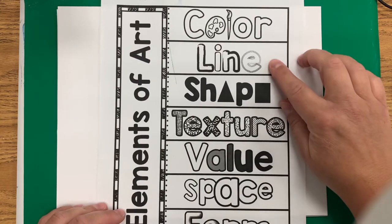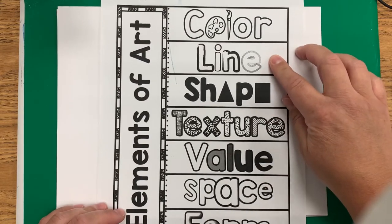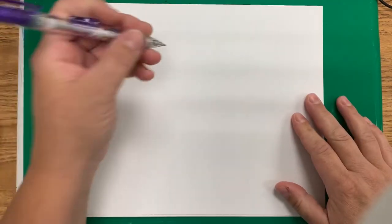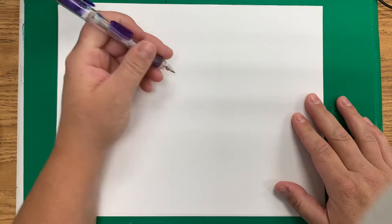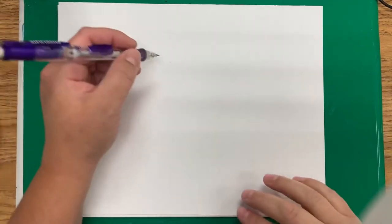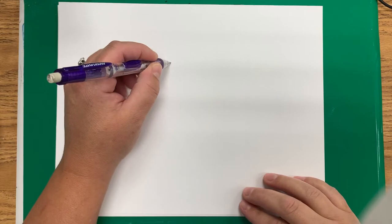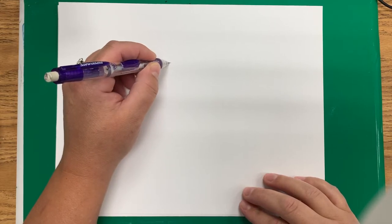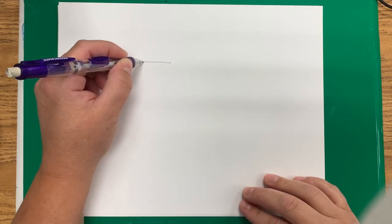Today we're going to start with line — it's pretty basic. For our artwork today we're going to explore some different kinds of lines. A line is a path of a point. If I have my pencil and I just put it on the paper, we don't have anything — we just have a point. But once your pencil starts moving and you make a path with your point, then you have a line.